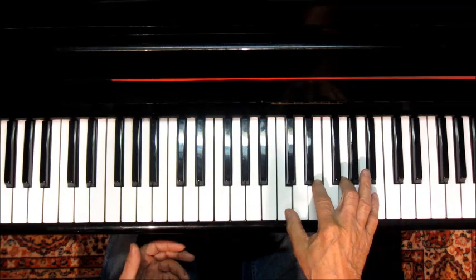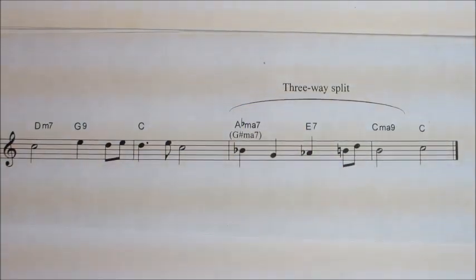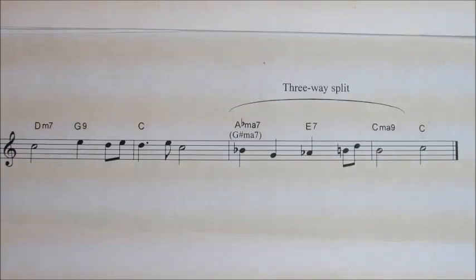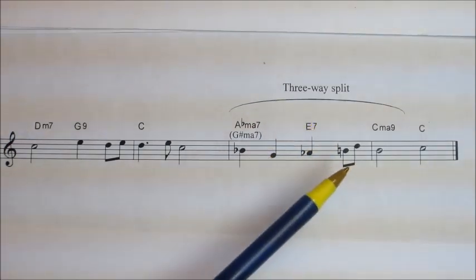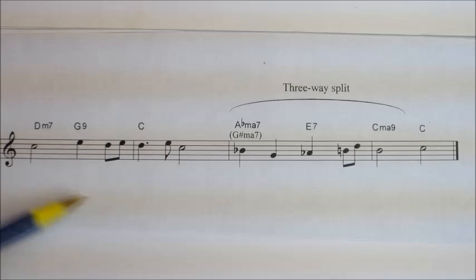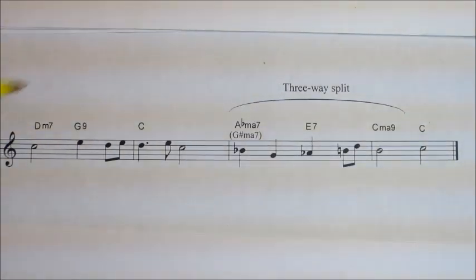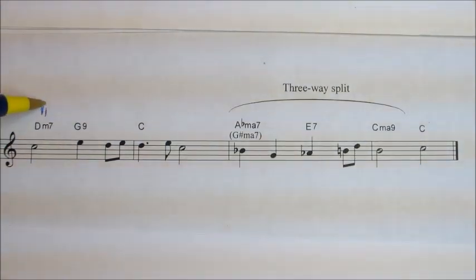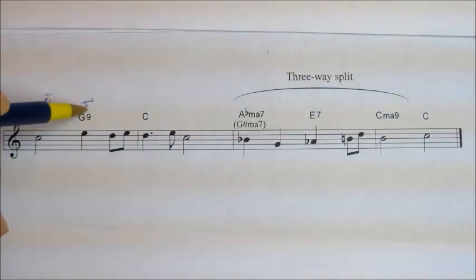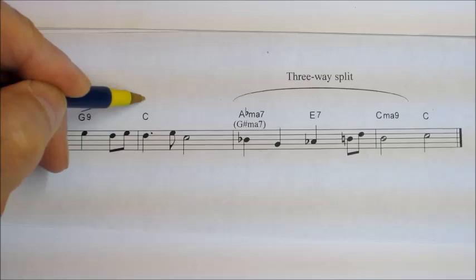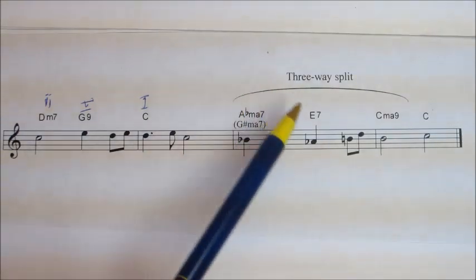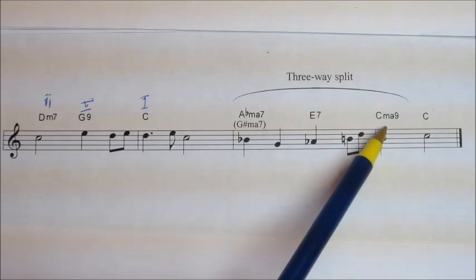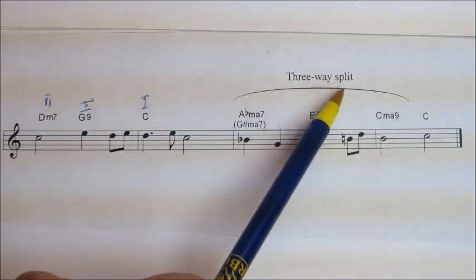Equal division of the octave in three parts. I use the three-way split to enhance the ending of a given song. In the key of C, I come in on my finishing sequence with a subdominant II chord, going to a dominant V chord, and ending up on the tonic I chord. Then I drop down two whole tones — a major third — to my A flat chord, another two whole tones to my E, and back down to my C chord, creating a three-way equal split of the octave.